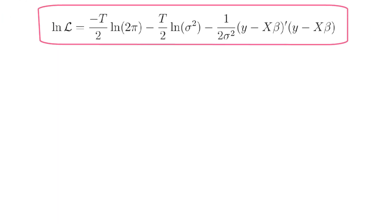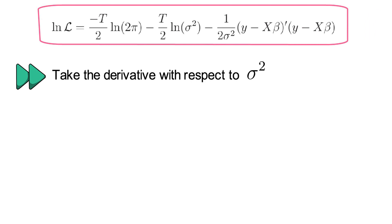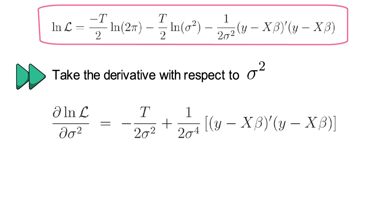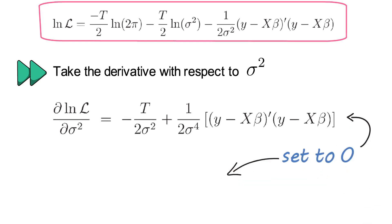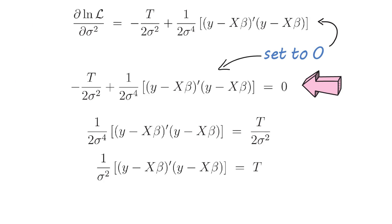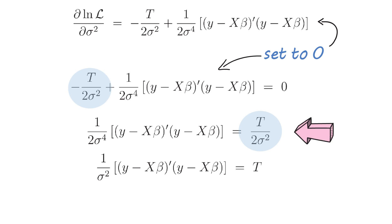Now let's move on. We want to find the maximum likelihood estimate for sigma square. We therefore take the partial derivative of the log-likelihood function with regard to sigma square. That gradient needs to be set to zero if we want to find the optimal sigma square. We bring minus t over 2 sigma square to the other side and end up with the equation that 1 divided by 2 sigma 4 multiplied by the sum of squared prediction errors equals t divided by 2 sigma square. Now we cancel out the 2 and cancel out one sigma square term, ending up with 1 over sigma square multiplied by the sum of squared prediction errors equals capital T.